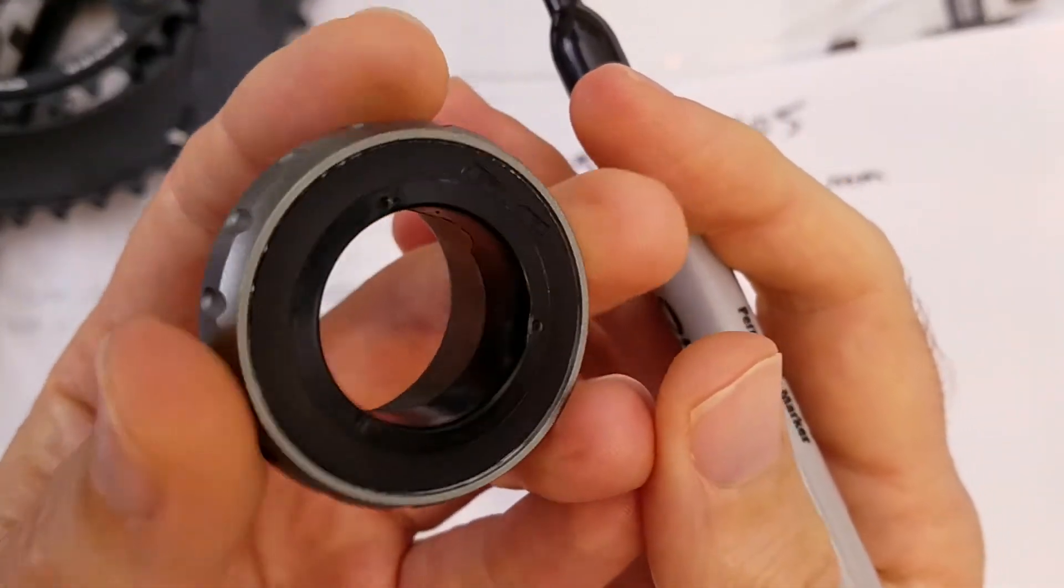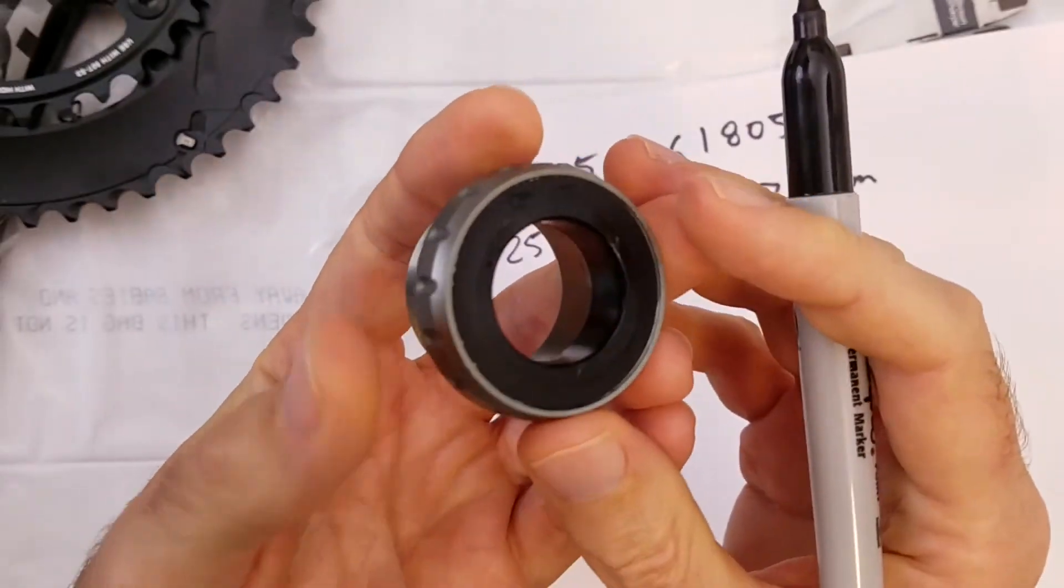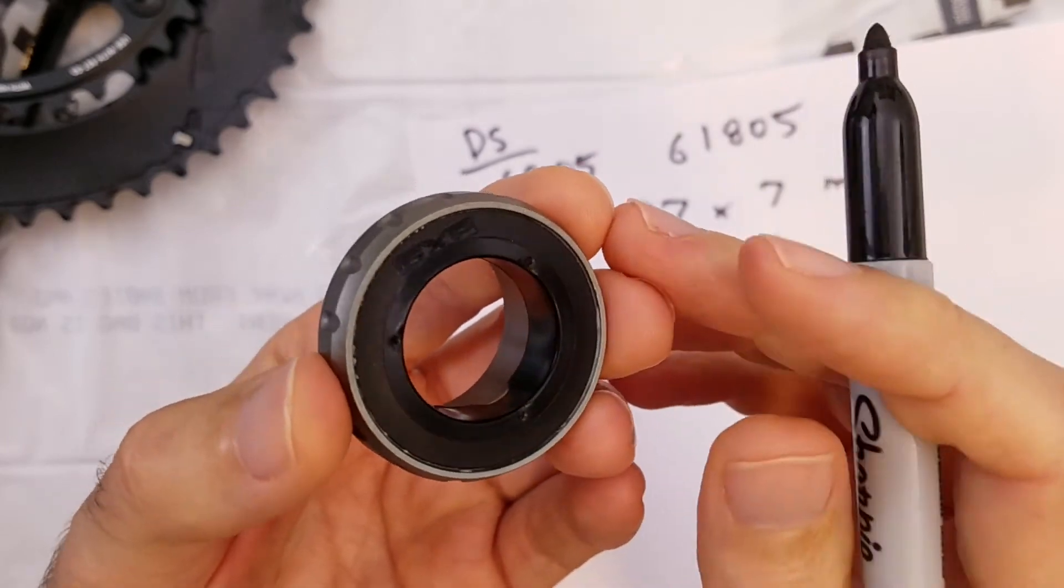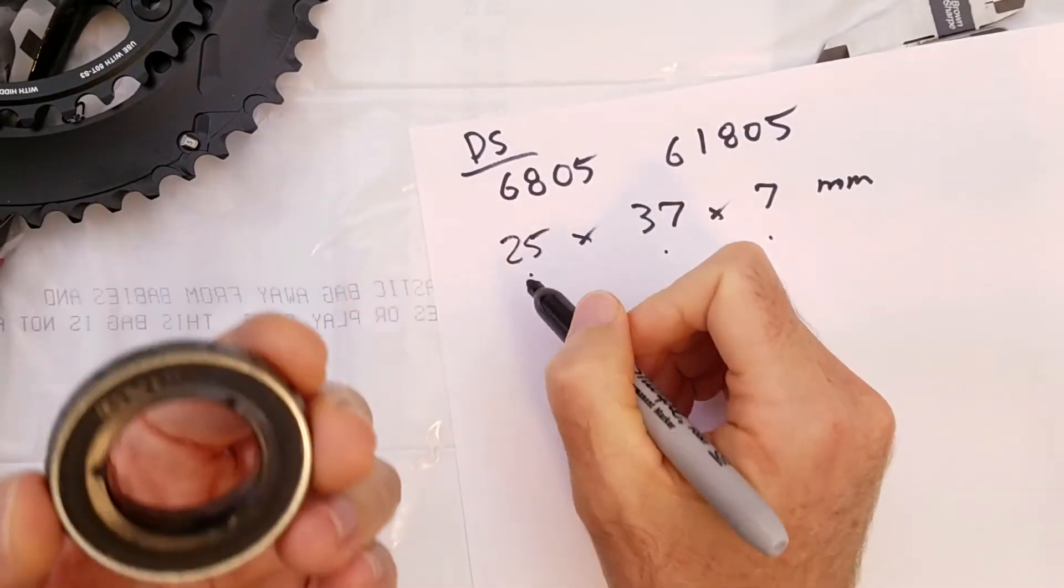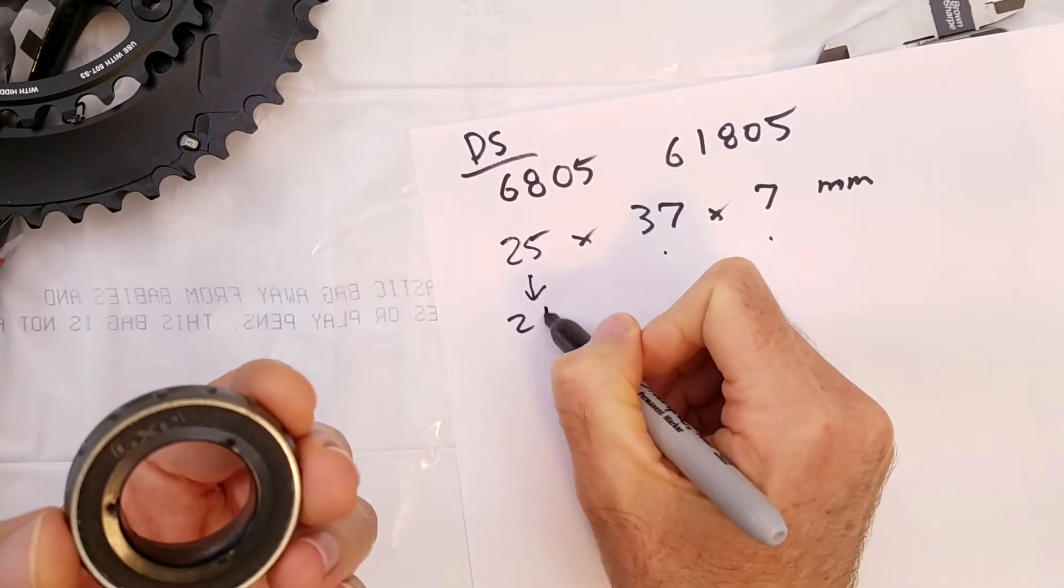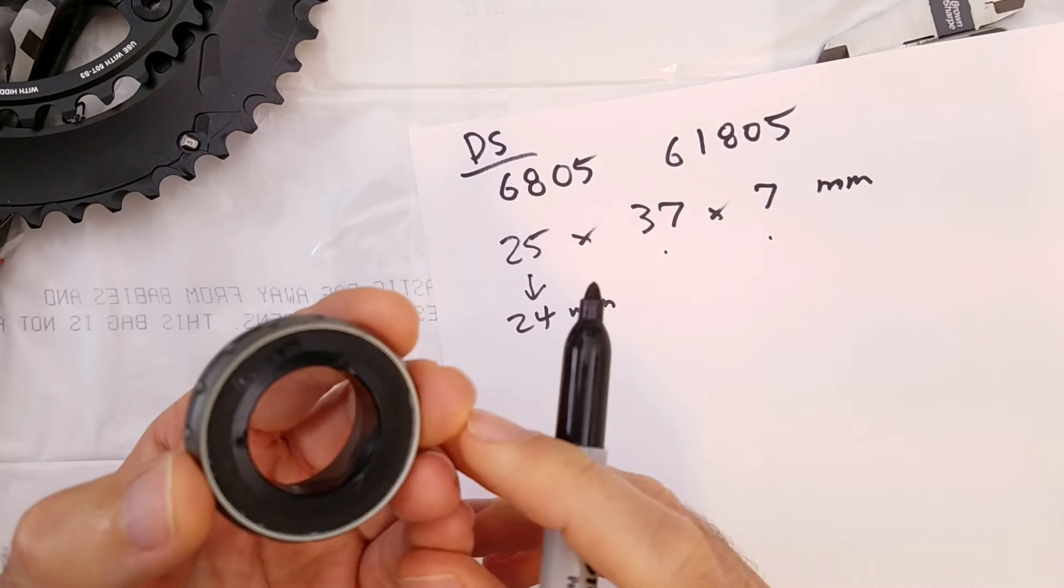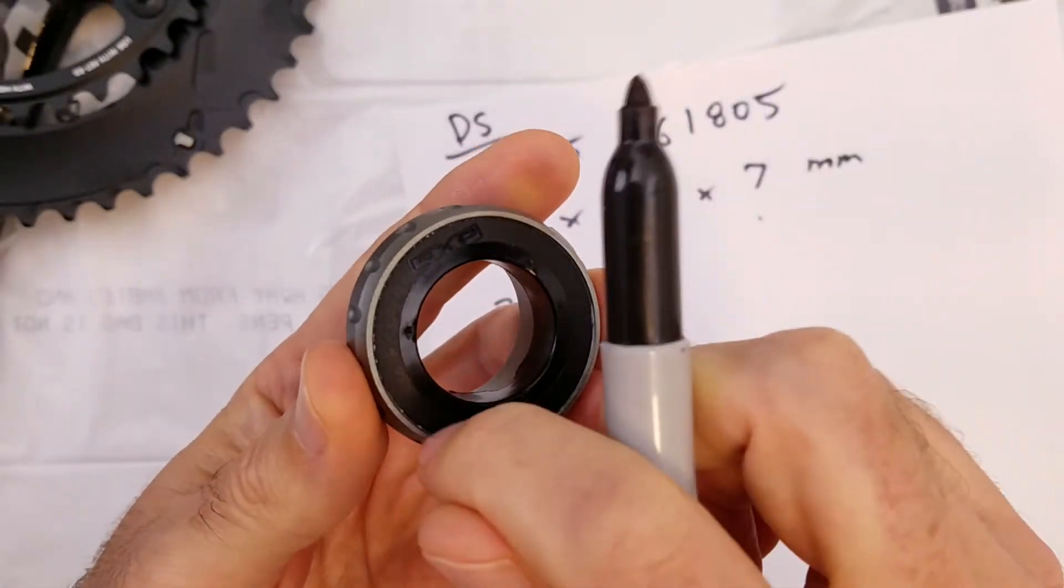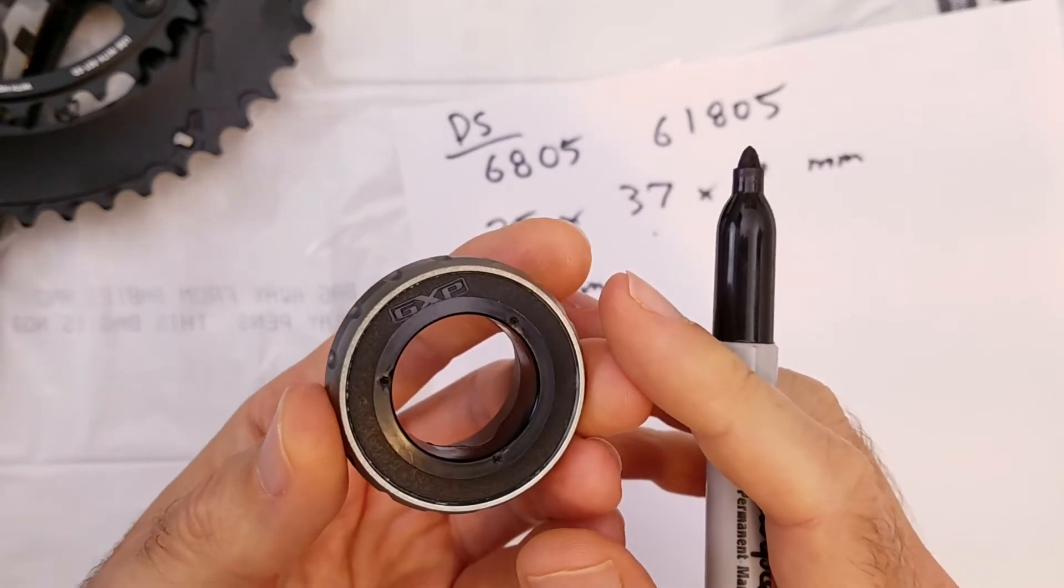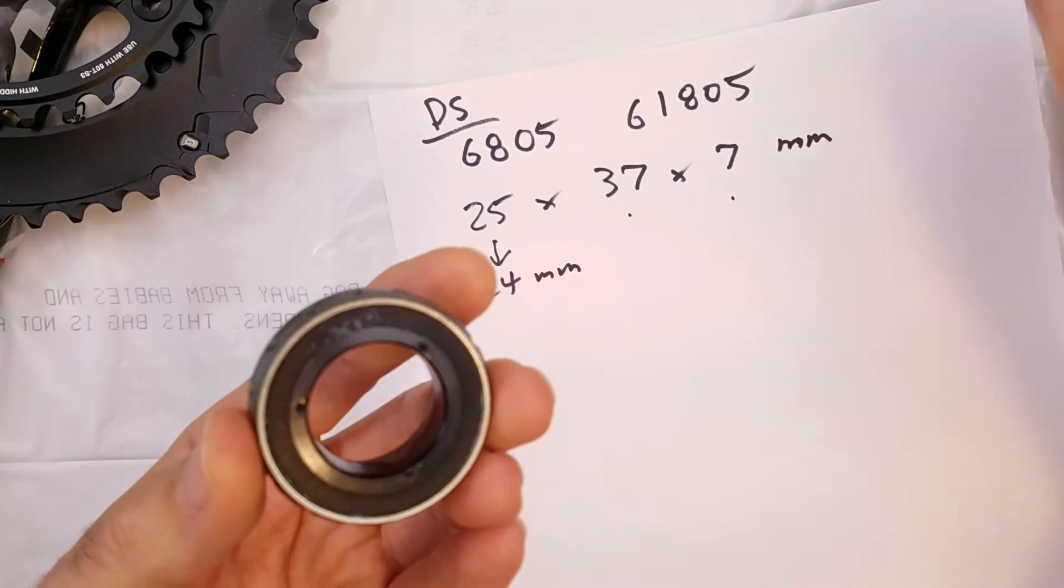And if you look closely you can see that there's this plastic top hat or reducer or shim, whatever you want to call it, that reduces the inside diameter from 25 down to the 24 millimeters of the crankset spindle. And also I believe that under this plastic top hat is a seal, similar to the seal on the non-drive side.